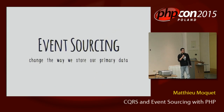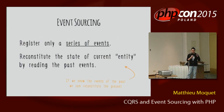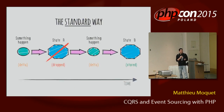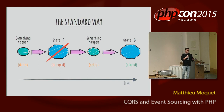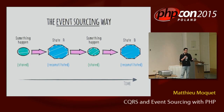Now let's go to the second part: event sourcing. Event sourcing plays well with CQRS. It basically changes the way you save your data. Usually, you save a state of your data — for example, you have a bank account and you store that there is 10 euros on it, then 20 euros, and you lose the past events. With event sourcing, all you need to store is the events themselves. If we know the events of the past, we can easily reconstitute the present.